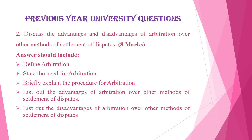For this question, first answer what is arbitration, then state the need for arbitration in not less than five sentences, then briefly explain the step-by-step procedure for arbitration and the role of the arbitrator. Then list out the advantages of arbitration as compared to other modes of dispute settlement. Similarly, list out the disadvantages of arbitration as compared to other modes of settlement of disputes, and also specify for what type of cases arbitration will be better.